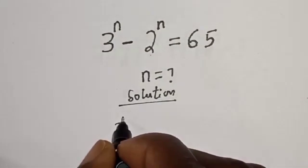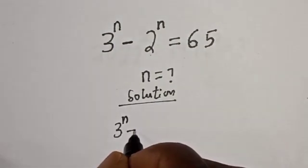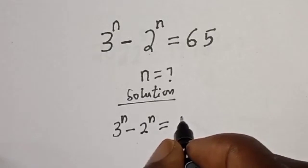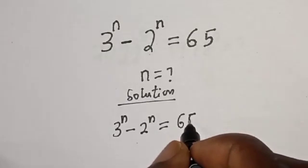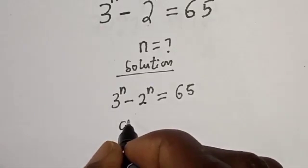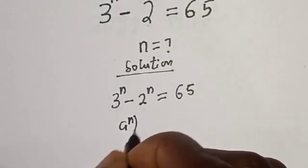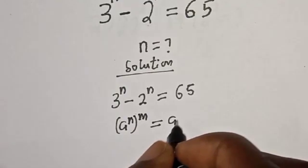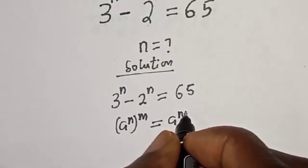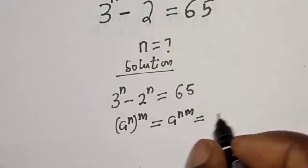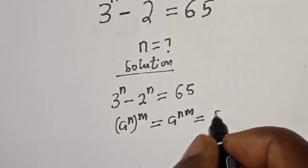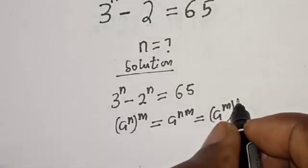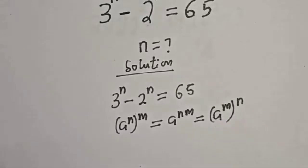Solution. 3 raised to power n minus 2 raised to power n is equal to 65. Recall the rule: L raised to power n to the power of m is equal to L raised to power n times m, which is equal to L raised to power m to the power of n.